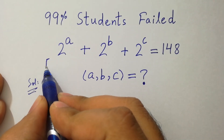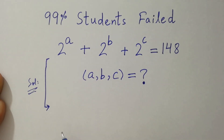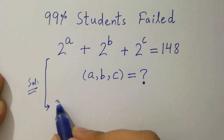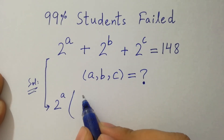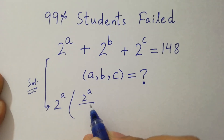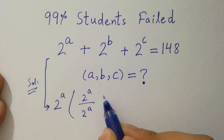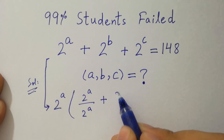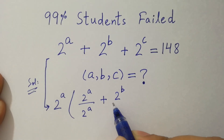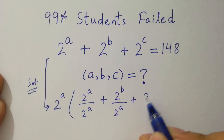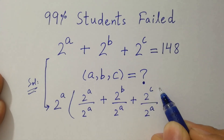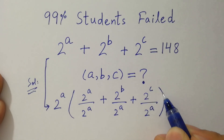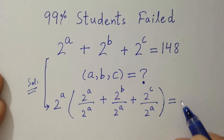To solve this problem, 2 to the power a can be common. Now we have 2 to the power a times the quantity: 2 to the power a over 2 to the power a plus 2 to the power b over 2 to the power a plus 2 to the power c over 2 to the power a, equal to 148.